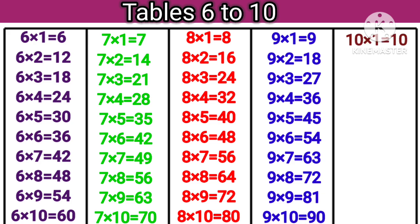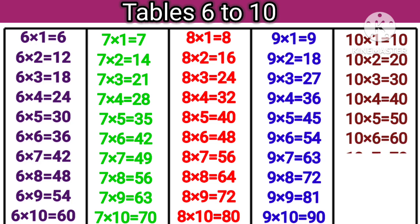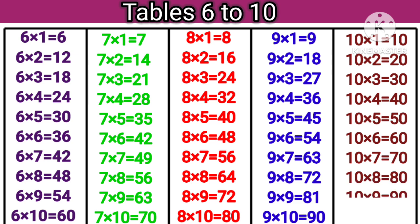10 ones are 10, 10 twos are 20, 10 threes are 30, 10 fours are 40, 10 fives are 50, 10 sixes are 60, 10 sevens are 70, 10 eights are 80, 10 nines are 90, 10 tens are 100.